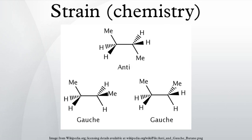The A-value is a thermodynamic parameter and was originally measured using the Gibbs free energy equation. Torsional strain is the resistance to bond twisting.